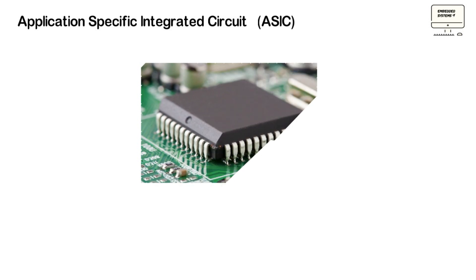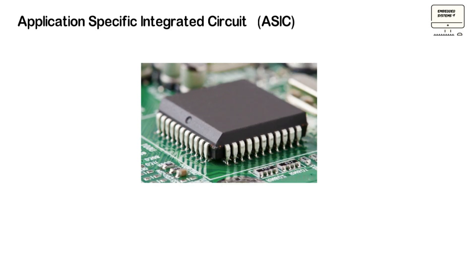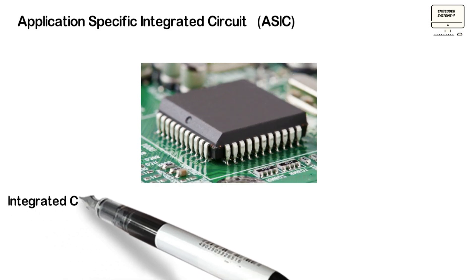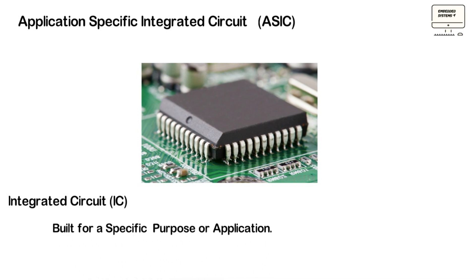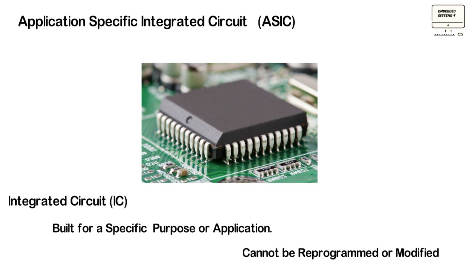Application Specific Integrated Circuit — ASIC — is an integrated circuit chip that is specially built for a specific purpose or application. It's a chip which serves the purpose for which it has been designed and cannot be reprogrammed or modified to perform another function or execute another application.